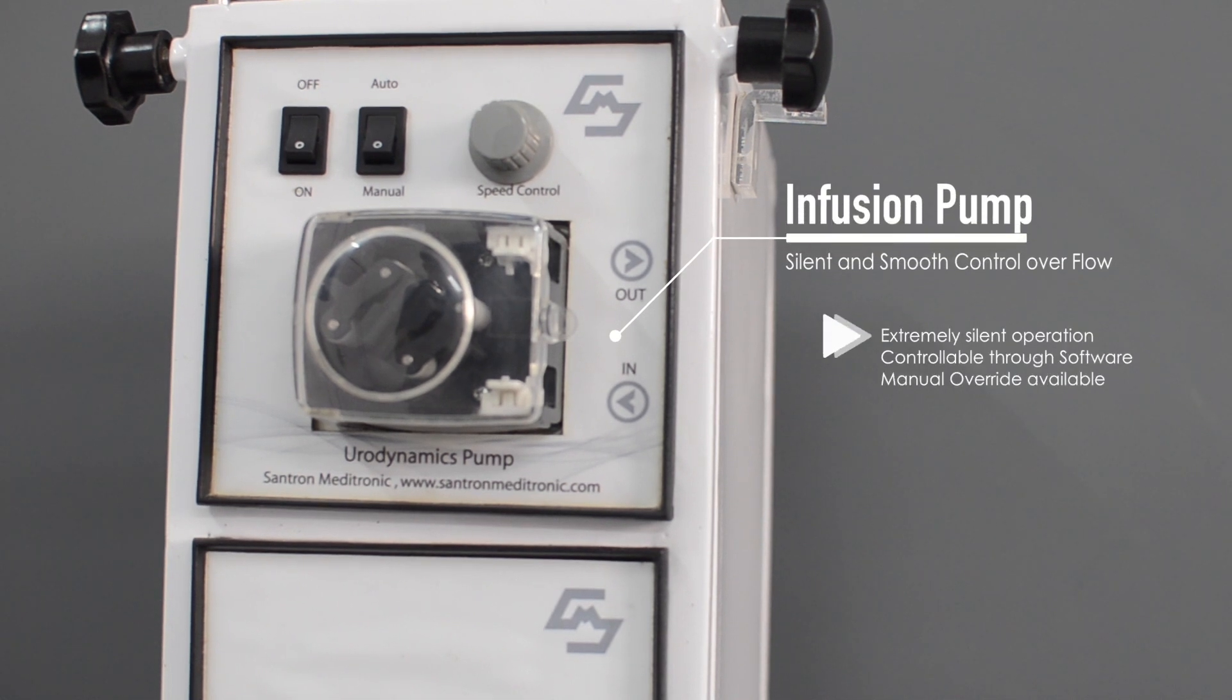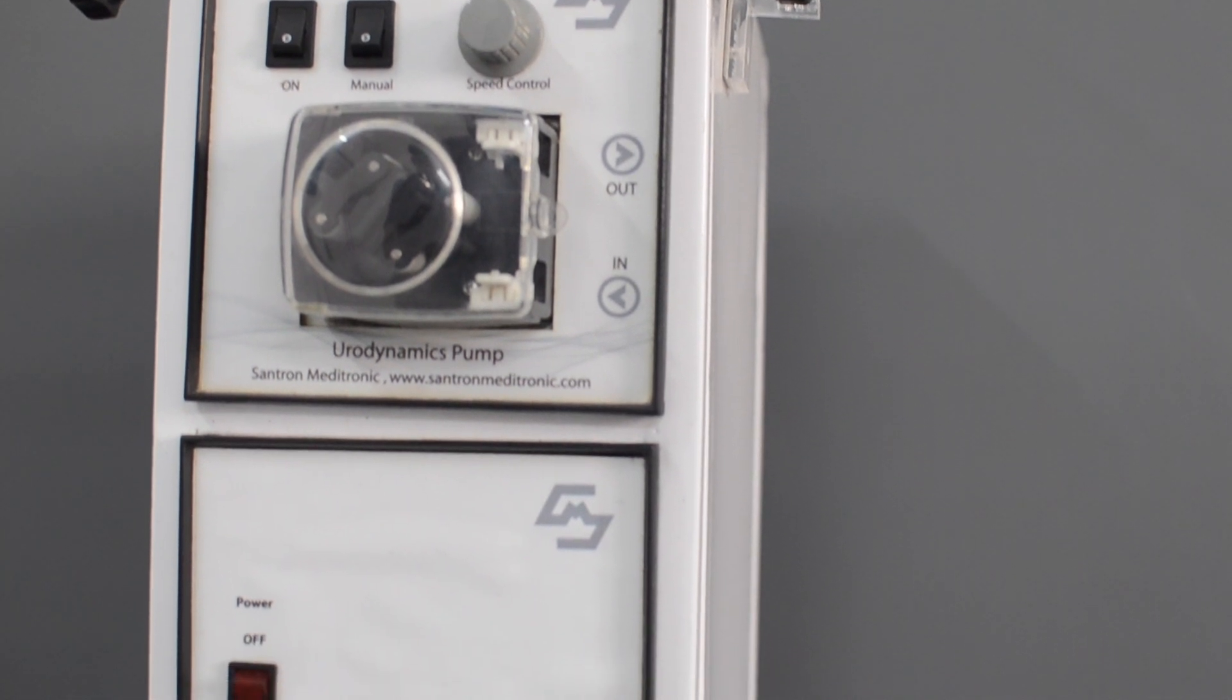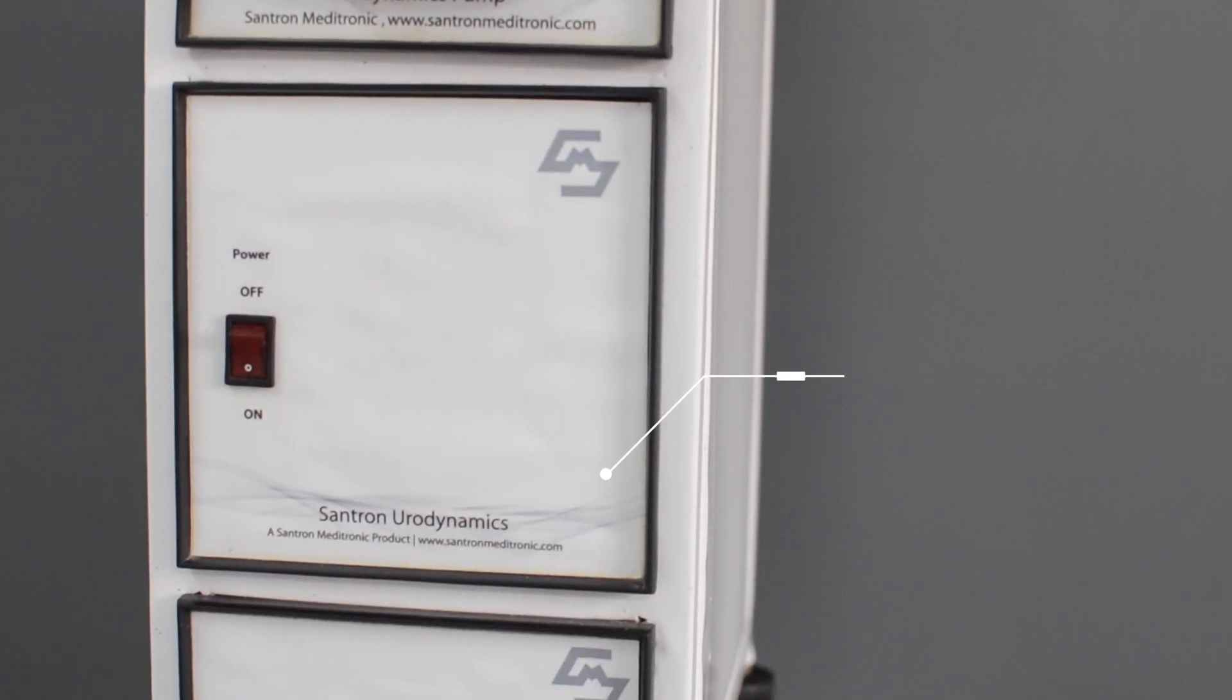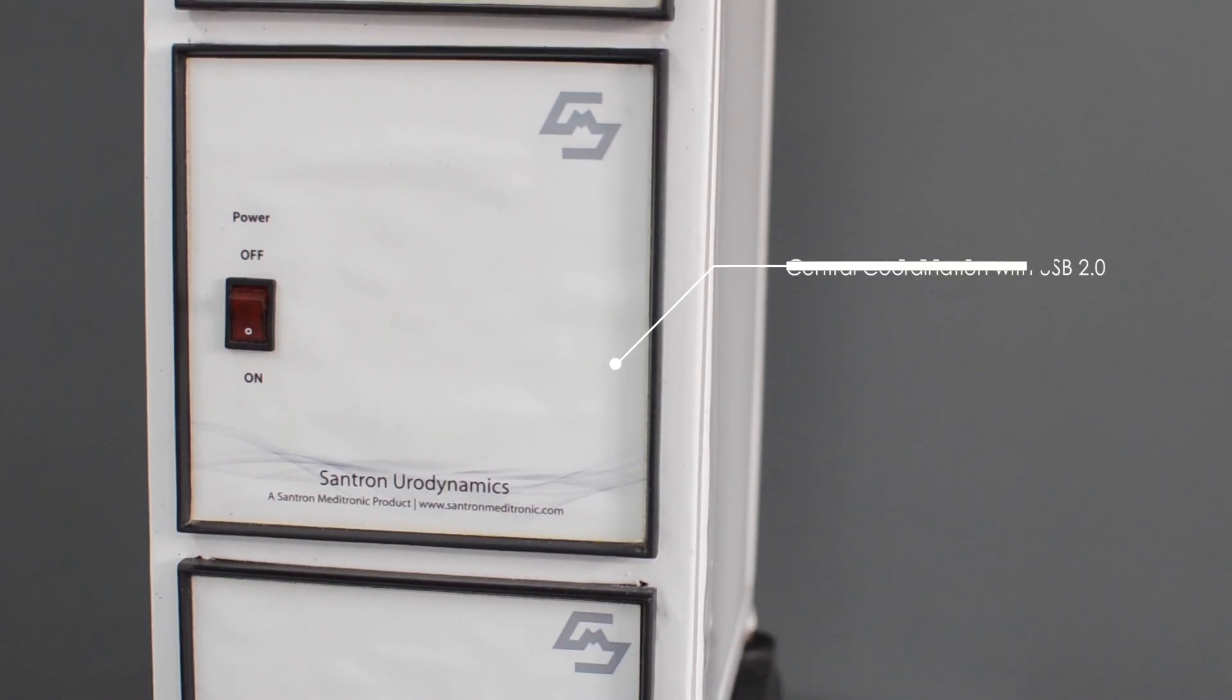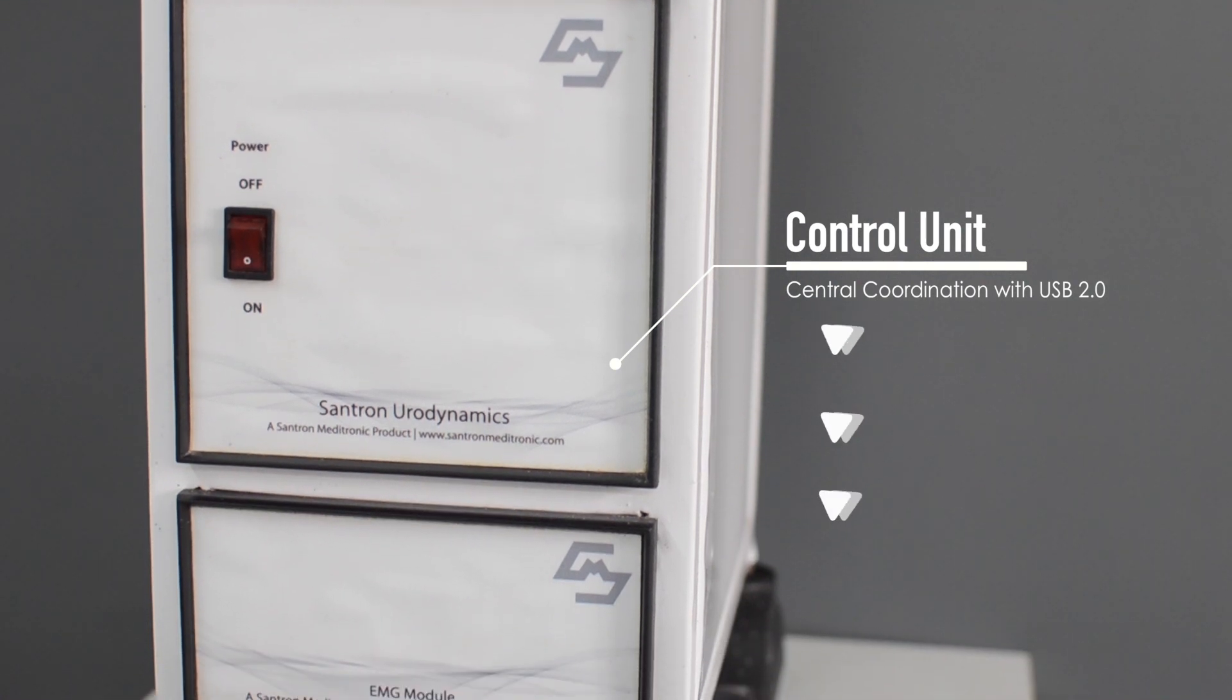The central control unit of the UDS system is powered by USB 2.0. It's a module based system with high quality surge protection.